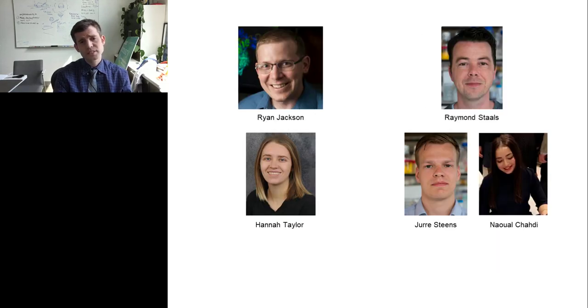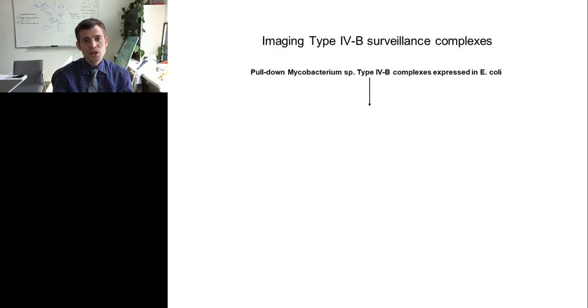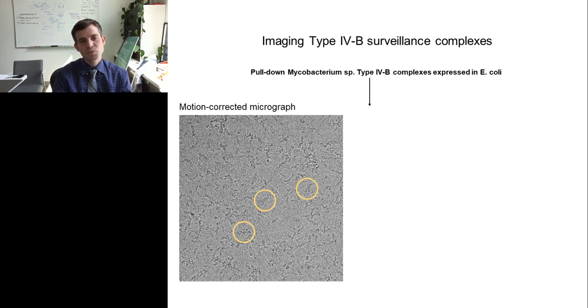This is a collaboration between my laboratory and the laboratories of Ryan Jackson and Raymond Stahls and some great graduate students and postdocs that are in their lab, and a postdoc in my laboratory, Yi Zhou. What we did is we overexpressed the proteins from a type 4 complex and a mycobacterium in E. coli. We pulled down using a tag on one of the subunits. After pulling down, we froze grids and we were able to collect micrographs on our Titan Krios here at UT Austin.